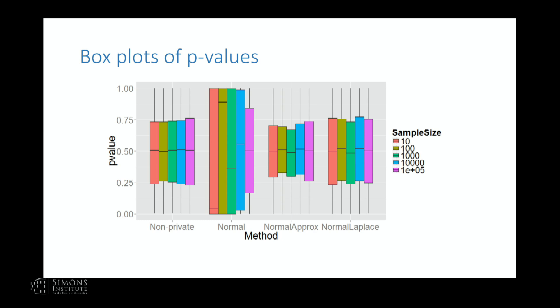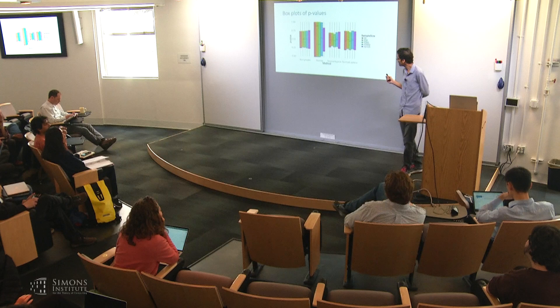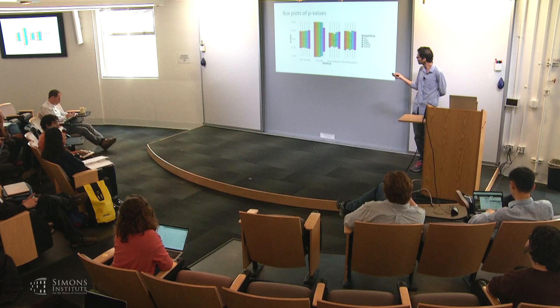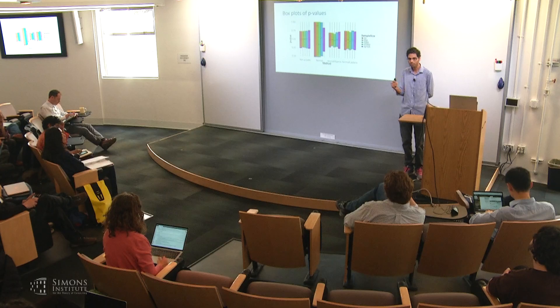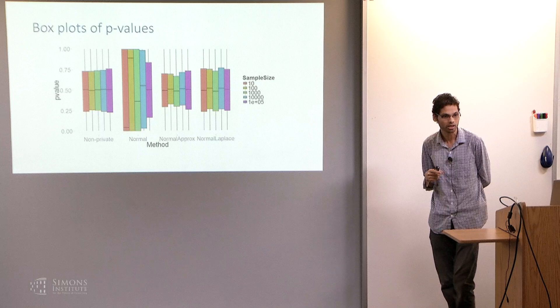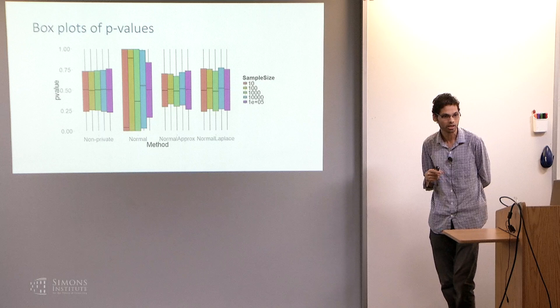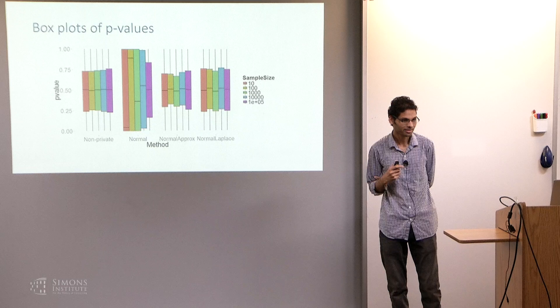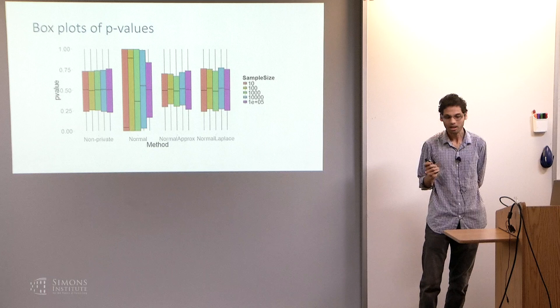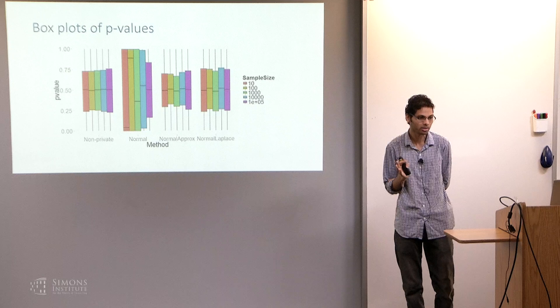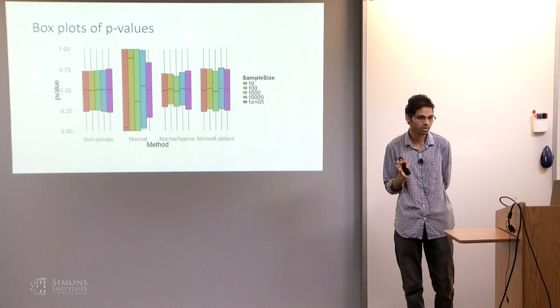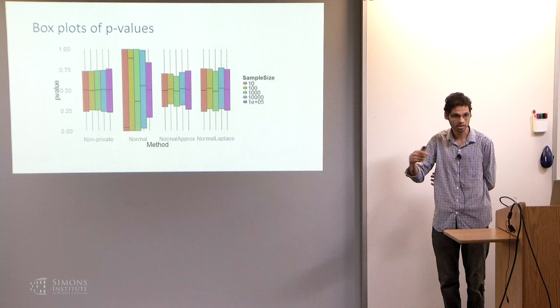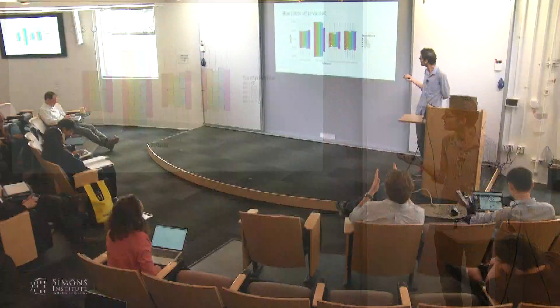Question: How bad do things look in the tails? It depends on which method you use. With the naive normal approximation you get a very heavy-tailed distribution, and approximating it by a normal will fail badly. The normal-Laplace approximation captures the heavy tails better. For large sample sizes, the second term becomes very small so the tails also work reasonably with the normal approximation. But for smaller sample sizes, the normal-Laplace approximation captures the heavy tails as well. The concern is that looking at the median understates how bad the normal approximation could be in the tails.